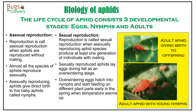Reproduction is called asexual reproduction when aphids are reproduced without mating. Almost all the species of aphids are generally produced asexually. Those aphids that reproduce by mating are called sexually reproduced aphids. Asexually reproduced aphids generally give birth to live nymphs, whereas some individuals of asexually produced aphids reproduce sexually and lay eggs as overwintering stages. These overwintering eggs hatch into nymphs early in the spring when temperature starts warming up.